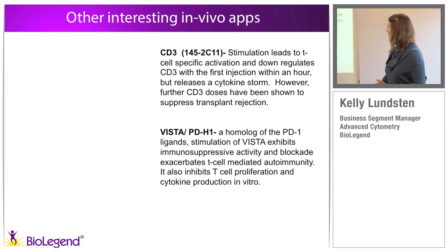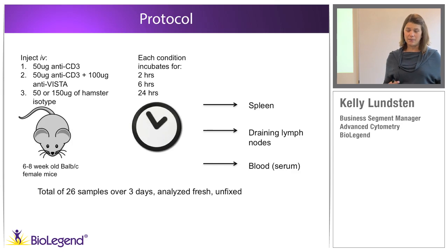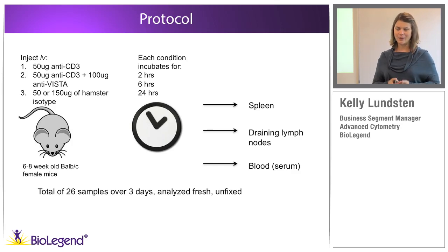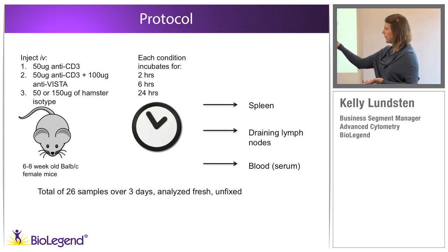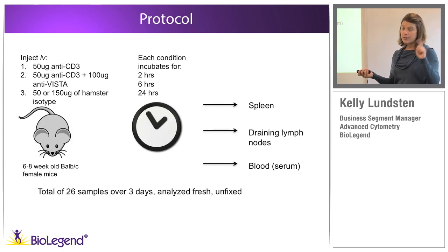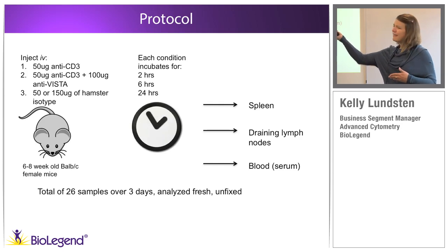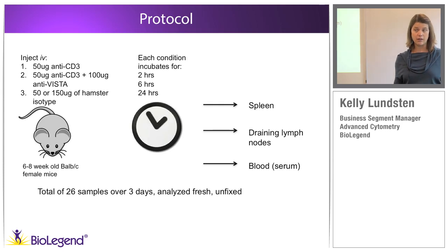The protocol I came up with uses six to eight week old BALB-C female mice with three treatment conditions: CD3 alone (stimulation only), a co-injection of CD3 and VISTA, and isotype controls. We did a lot of preliminary work to determine how much CD3 to inject — 50 micrograms, though we could probably have gone as low as 25. The VISTA application, however, was extremely undescribed in the literature, so we went with a higher concentration of 100 micrograms to ensure sufficient coverage.